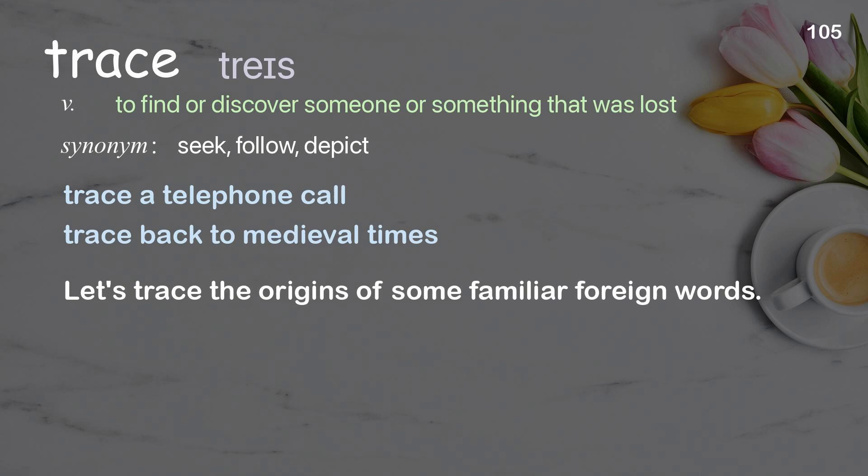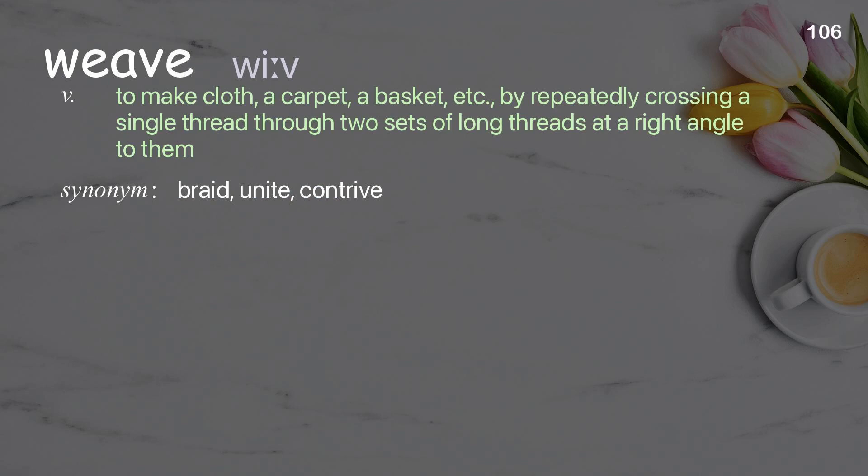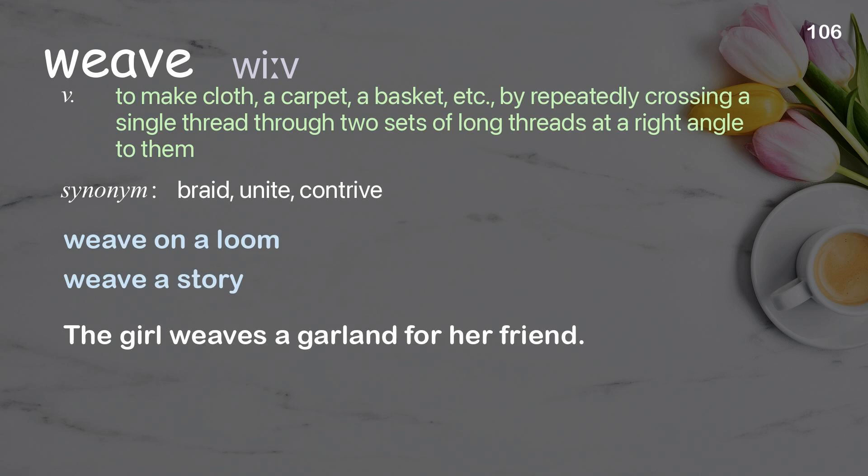Weave: to make cloth, a carpet, a basket, etc. by repeatedly crossing a single thread through two sets of long threads at a right angle to them. Examples: weave on a loom, weave a story. The girl weaves a garland for her friend.